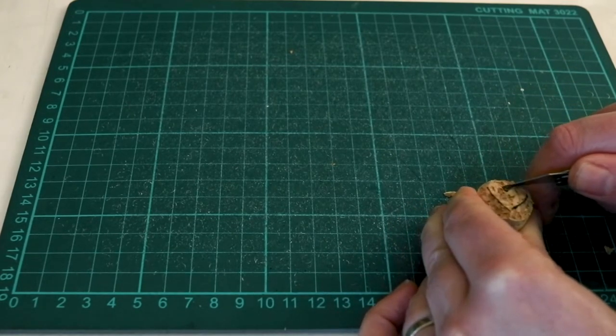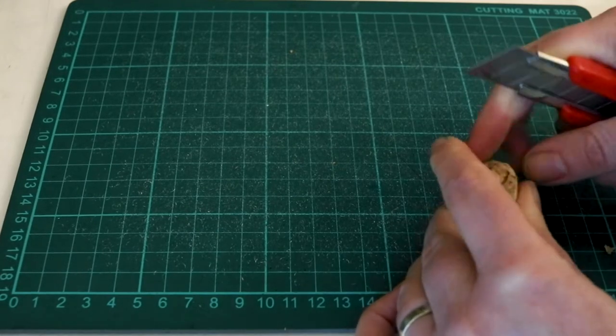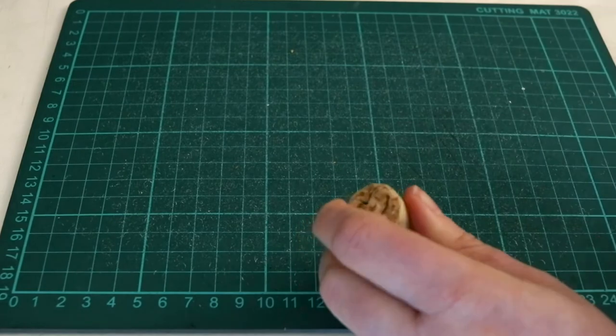When the main carving was all done I went around everything again to make sure that all of the lines were smooth and then it was time to try the stamp out.